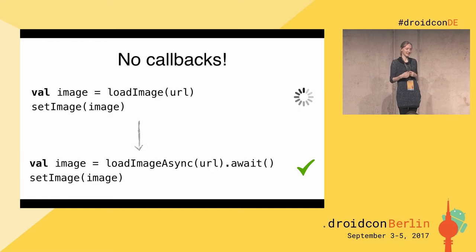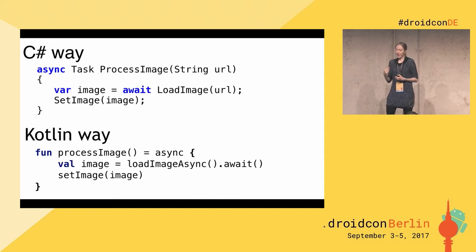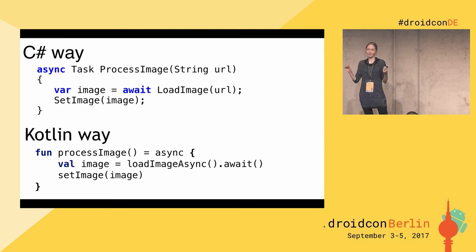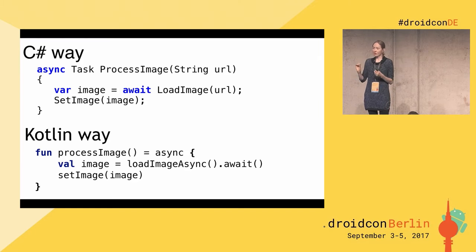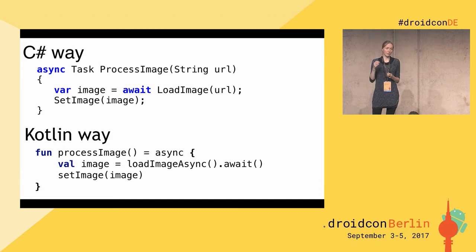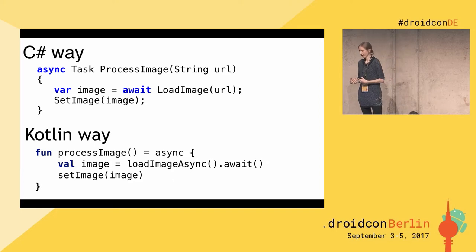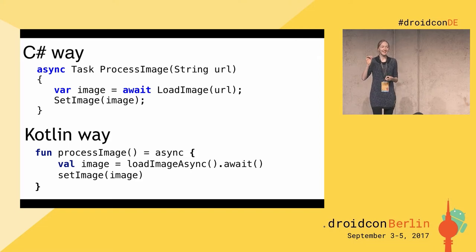Now we're ready to discuss how we support async/await. Before that, as I mentioned, async/await is a feature already available in different languages like C#, where async and await are language keywords — built into the language. If you're familiar with C# and this feature, you can use it in Kotlin in a similar fashion. Because we have the same async and await — however, in Kotlin, they are not keywords. They are just regular functions.